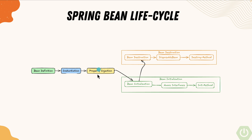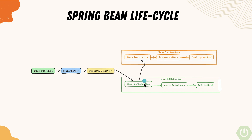Then there is property injection, which corresponds to the dependency injection part. Spring Boot injects the dependencies required for the bean either through constructor injection or method injection. Within this step, bean initialization also happens — after injection, Spring initializes the bean and calls any initialization methods or lifecycle callbacks. I won't go into @PostConstruct or InitializingBean interface in this lecture as it would overcomplicate things.